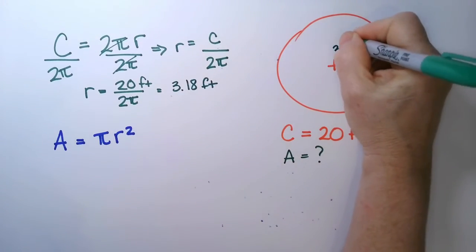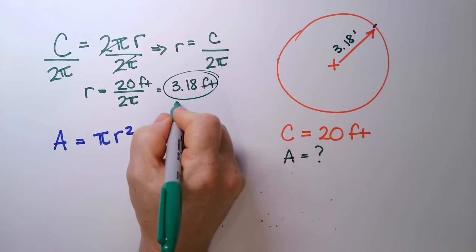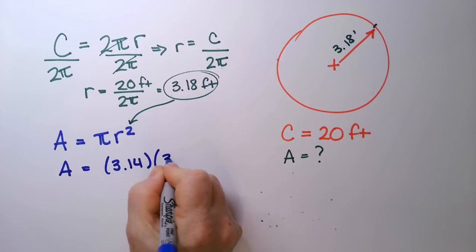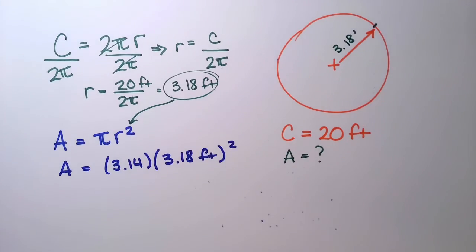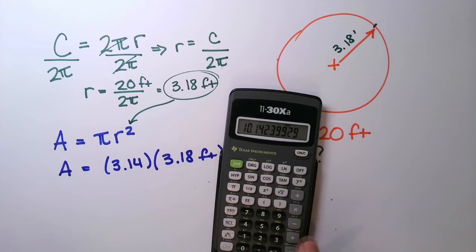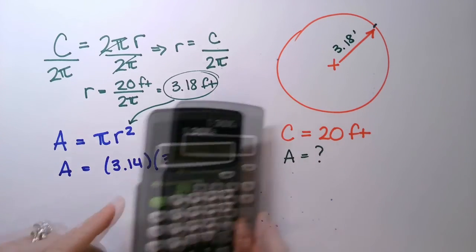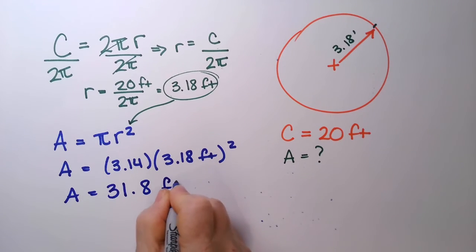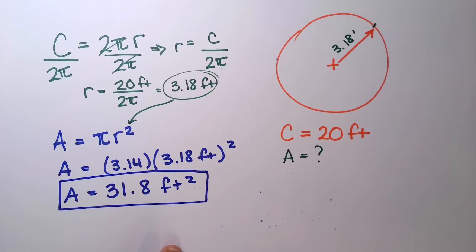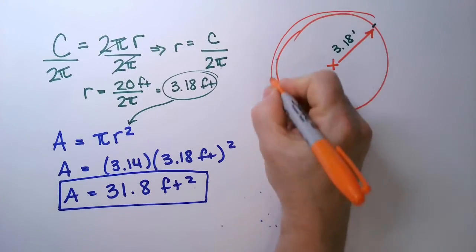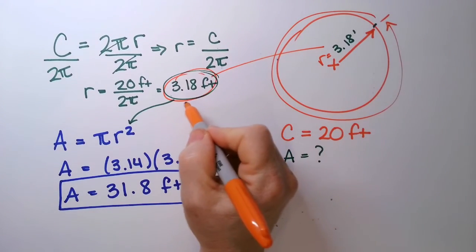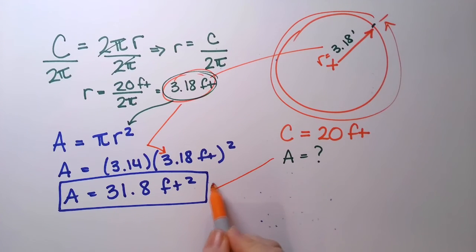So we just found the radius is 3.18 feet. Now I'm going to put that into the area equation. My area is 3.14 times 3.18 feet, squared. So I square that number and multiply by pi, and my area equals 31.8 feet squared. Given the circumference of the circle, we were able to find the radius and then use that radius to find our area. And that's how we find the area of a circle.